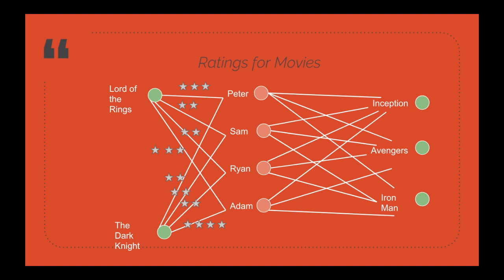Other use cases include recommendation services or personalization for a particular user, customer 360-degree views with entity relationships between different sources, fraud detection, and authentication/authorization problems where a single user has different roles and responsibilities and you want to map and relate different users — all of these benefit from the graph database's relationship model.